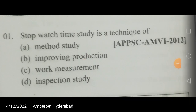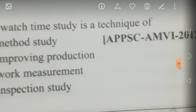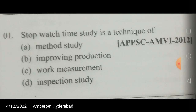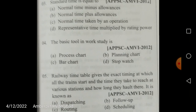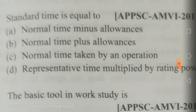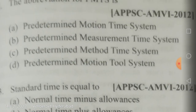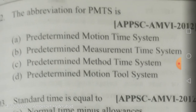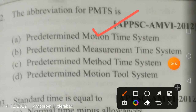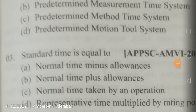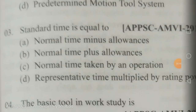Time study and work measurement are the two parts of your work study. The abbreviation PMTS stands for Predetermined Motion Time System. Standard time is equal to normal time plus allowances. Normal time is equal to observed time multiplied by rating factor.